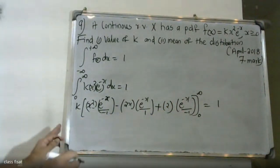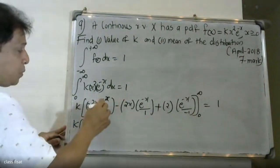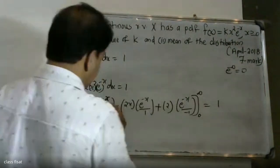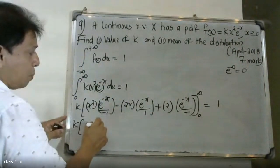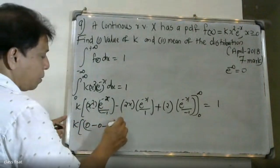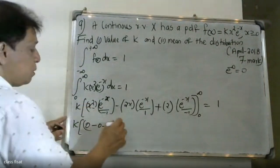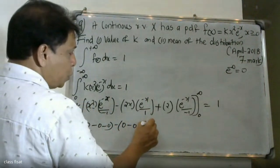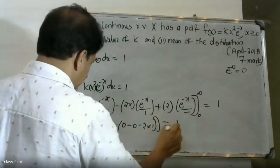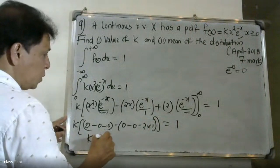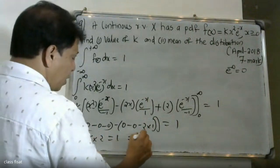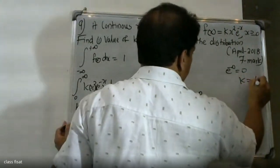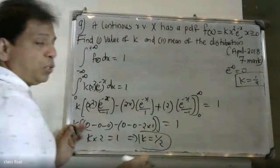Therefore, evaluating k times the integrated expression from 0 to infinity — the upper limit gives zero and the lower limit also contributes zero at the boundary terms — we get k times 2 equals 1. Therefore the value of k is equal to 1 by 2.